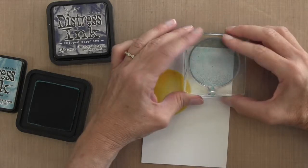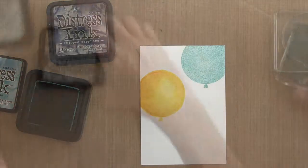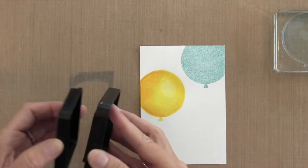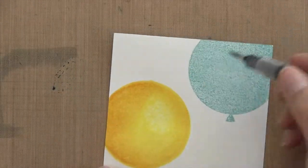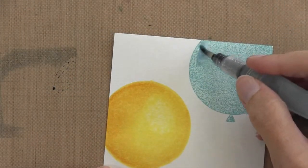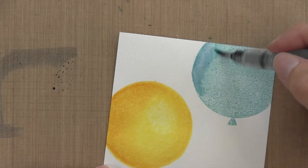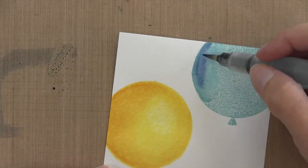My next balloon is going to be broken china, so I'm going to stamp that in the upper right-hand corner. All my balloons are hanging off the cardstock because I feel like it gives the image like there's something more than just the card. I'm going to take my chipped sapphire and put some of that on my craft mat and start with my shading. Now you can see how dotted this image is from the broken china, and that's why I'm going over the whole thing with water because that'll blend that out to make it look nice and smooth.